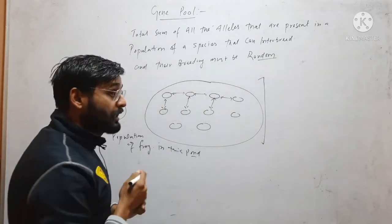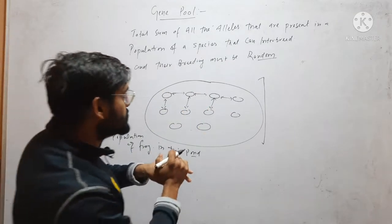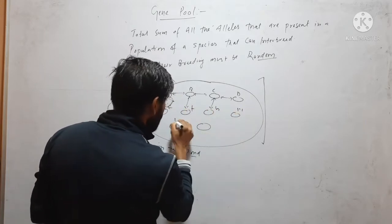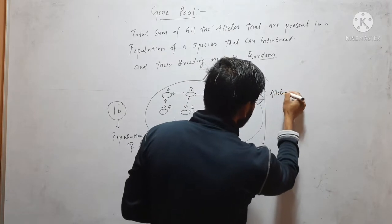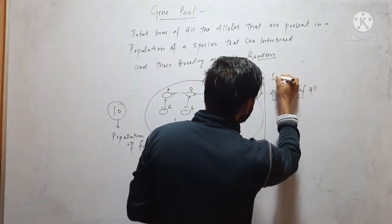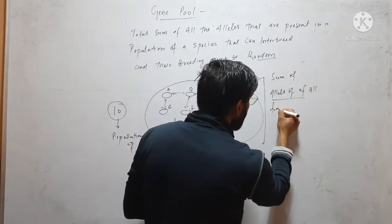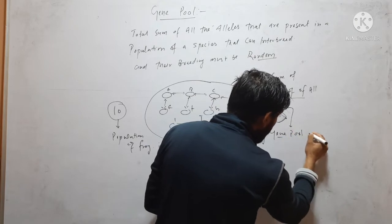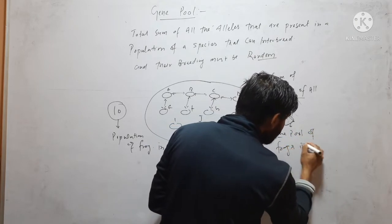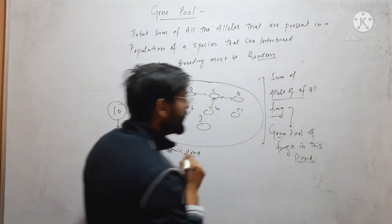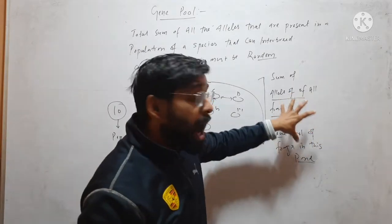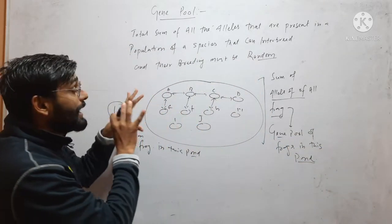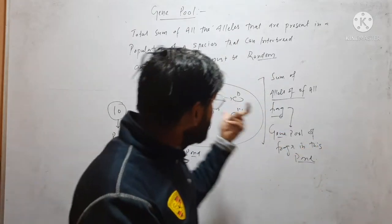All the alleles — the total sum of alleles that are present in this population — alleles of A, B, C, D, E, F, G, H, I, J — alleles of all. The sum of alleles of all frogs in this pond constitutes the gene pool. Here we count alleles, not genes. How many alleles are present in this population at the specific area, where the population can interbreed and their breeding must be random.